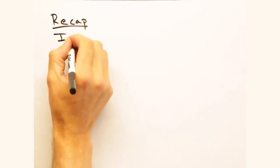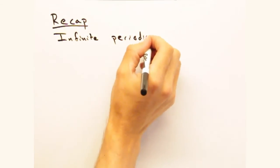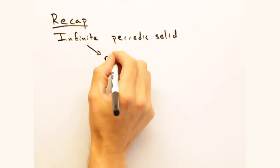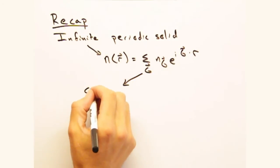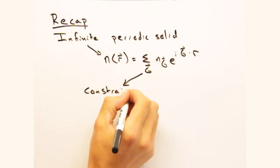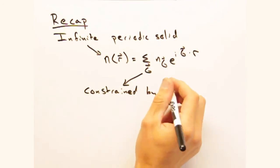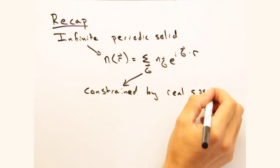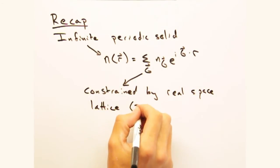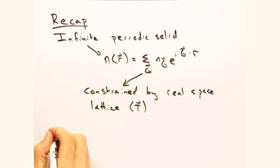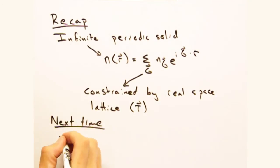So at this point, it looks like we have a well-developed expression for n of r. From assuming an infinitely periodic solid, we built a Fourier series out of complex exponentials that contain this Fourier space vector g. And constraining g and its constituent vectors in terms of the real space lattice vectors ensures translational symmetry was satisfied, and led us to explicit expressions for g1, g2, and g3. But we never talked about how to solve for the Fourier coefficients n sub g. We will be addressing this in detail next time.